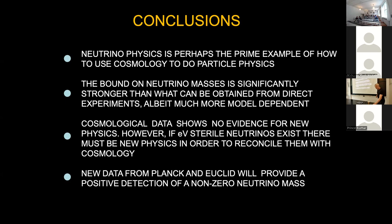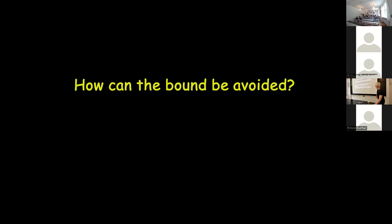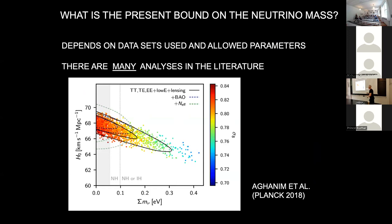Is there any impact of the Hubble tension on the bounds on the sum of neutrino masses? Going back to the WMAP era, there used to be a strong positive correlation between the Hubble parameter and the sum of neutrino masses — if you had a high neutrino mass, you'd prefer a larger Hubble parameter. That's no longer the case because the main bound from CMB now comes from lensing, which induces a negative correlation: the higher the neutrino mass, the worse everything gets. If you impose the SH0ES prior on the Hubble parameter and force it to 73, you end up with two incompatible datasets. It doesn't do much to the neutrino mass bound — it just makes the fit worse.